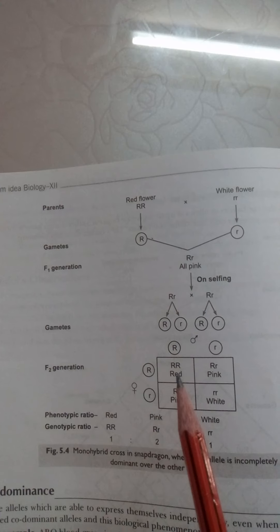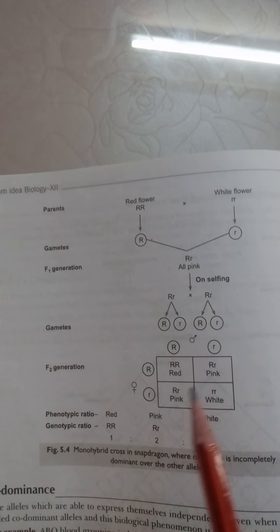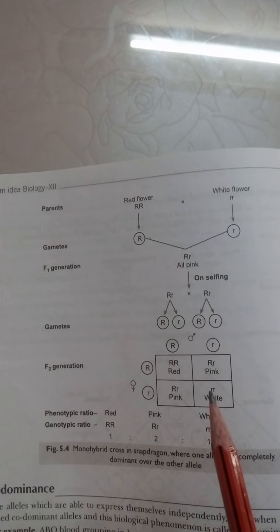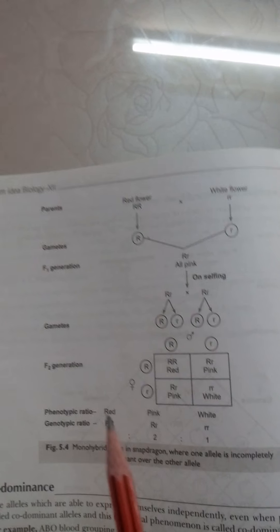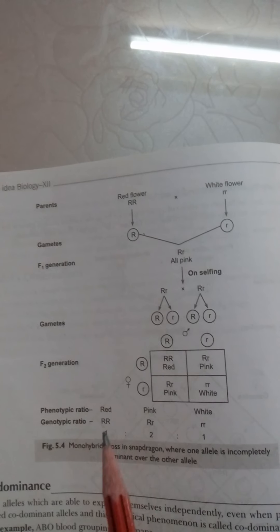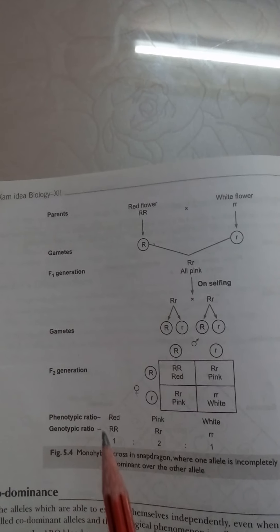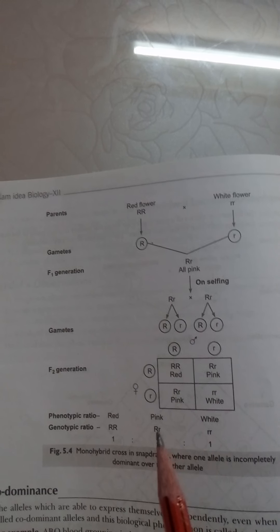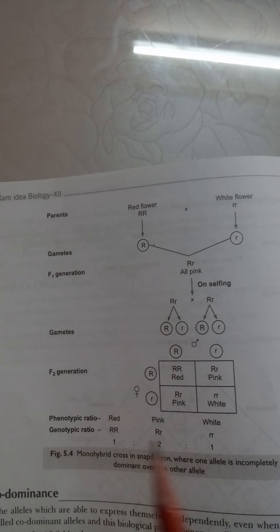One proportion red, two proportion pink, and one proportion white. The phenotypic ratio is red, pink, white: one, two, one.